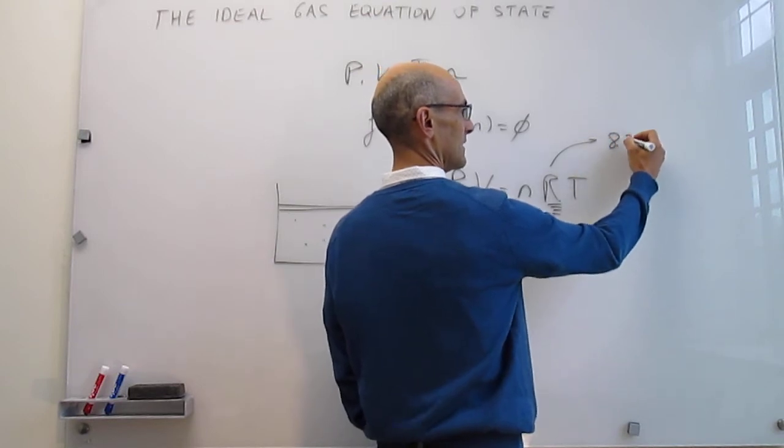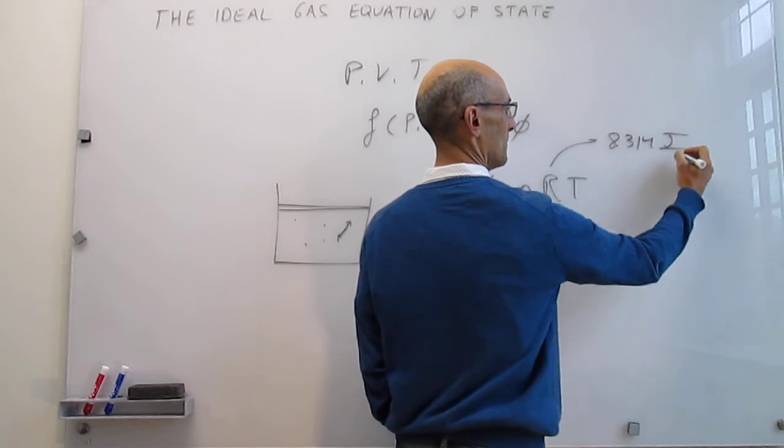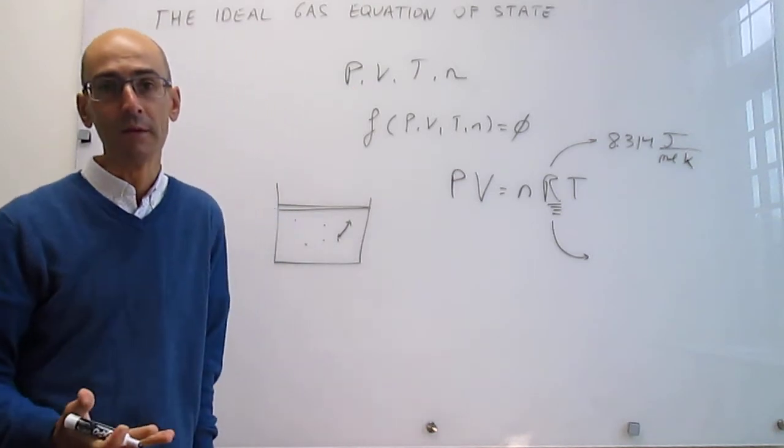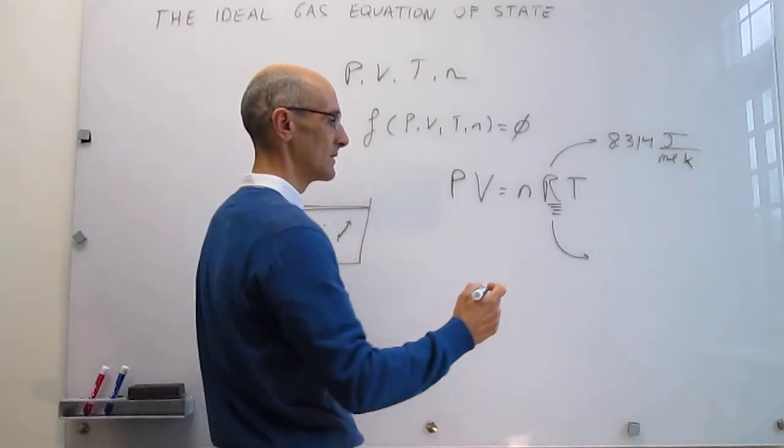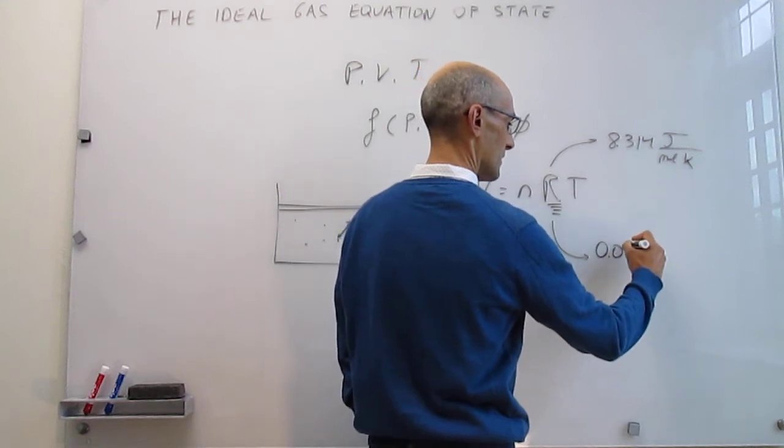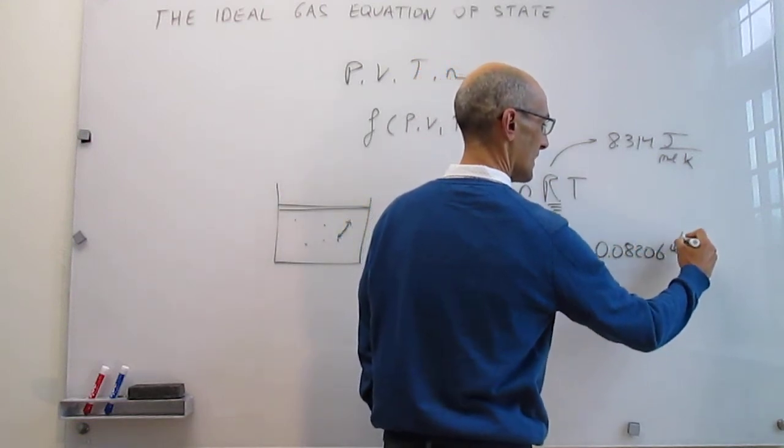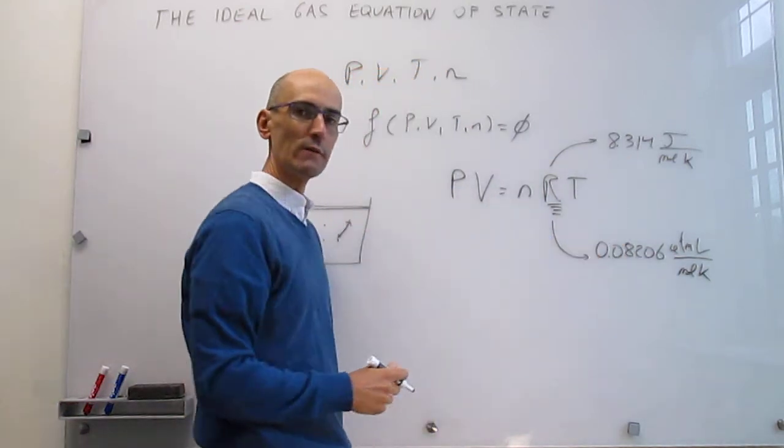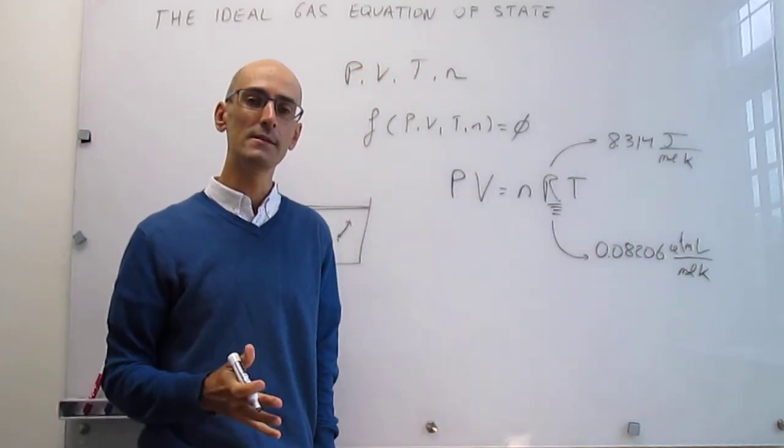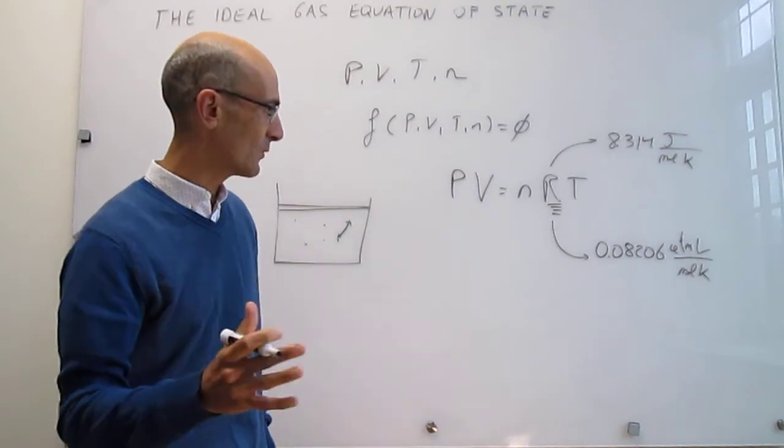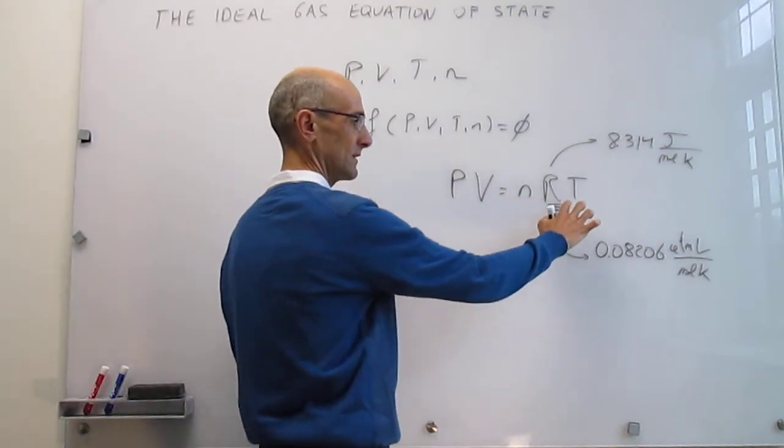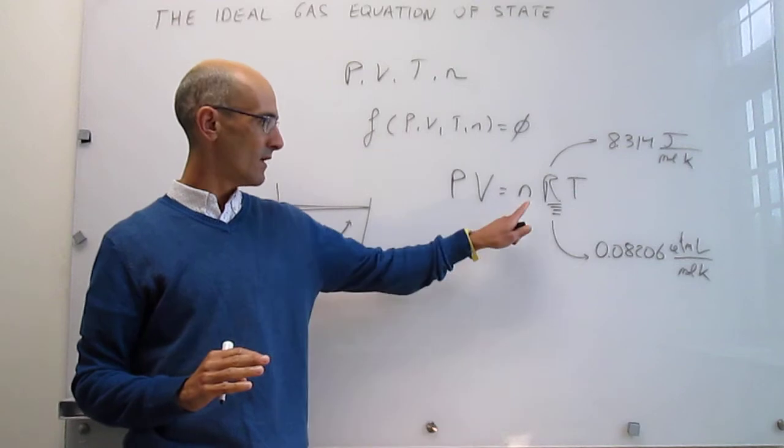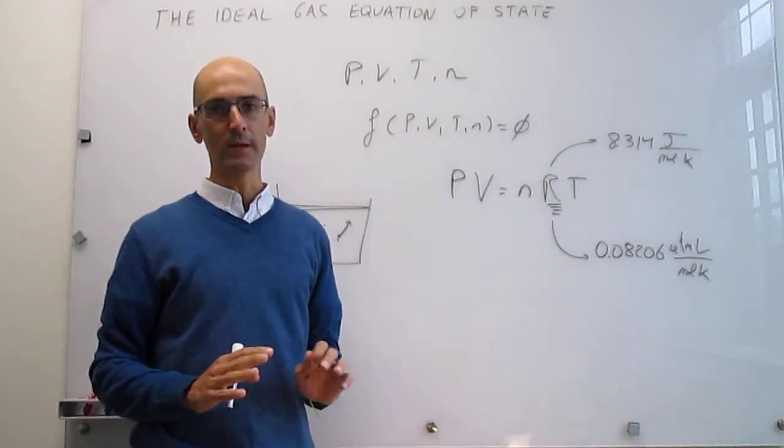And this can have a couple of values. In SI units, that is 8.314 joules per mole Kelvin. And then in a different set of units, which might be convenient to use in some problems, this value is 0.08206 atmosphere liter over mole Kelvin. Which one of these two values are used depends on the units for the rest of the variables. Number of moles and temperature always have to have the same units regardless of the units of pressure and volume. This is always going to be moles, and that is always going to be Kelvin.